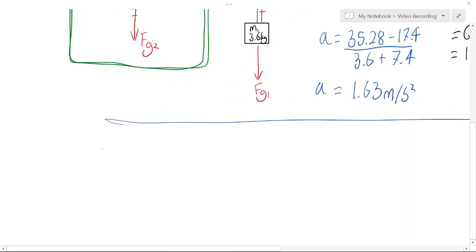So let's write an Fnet statement, a winners minus losers statement for the block on the table. So Fnet equals ma. That's Newton's second law. Well Fnet in this case is the tension force minus the friction force equals m2 times a.